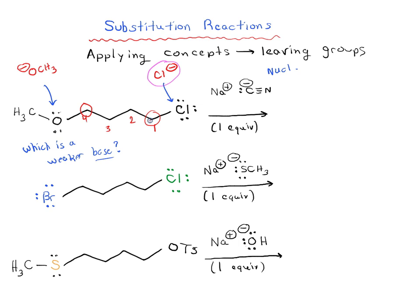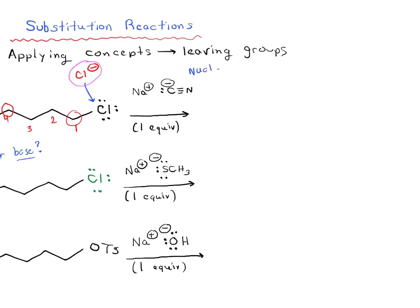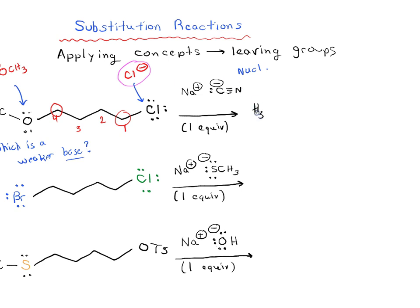This is our better leaving group, which means that CN is going to attack carbon one preferentially. Our product for this reaction will look like this: CH3O and then one, two, three, four. Now it is a substitution reaction which means that we're going to break the carbon-Cl bond and we're going to form the carbon-CN bond. So we are going to draw in C triple bond N, one pair, and that's our product. We're going to have expelled Cl minus. If I had to draw the mechanism for this reaction, it would look like this: take the lone pair from CN and draw it in doing the backside attack on carbon one, and then the second arrow we would draw a new lone pair on Cl. Notice our chlorine starts off neutral and becomes negatively charged.